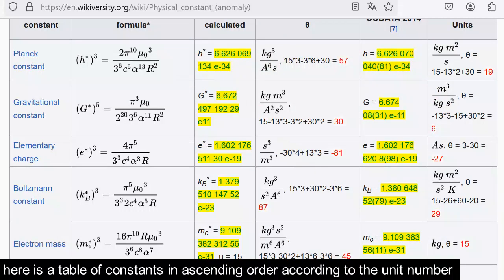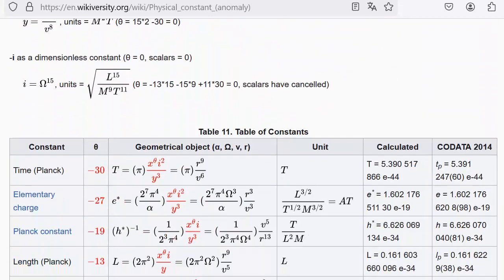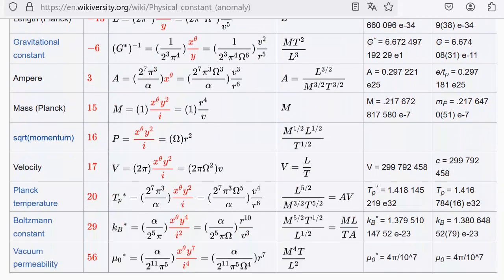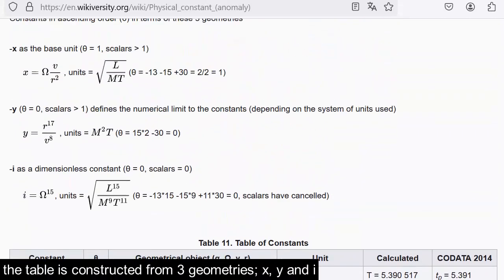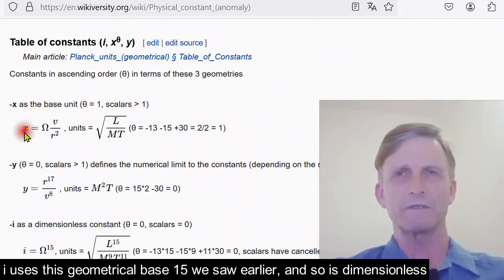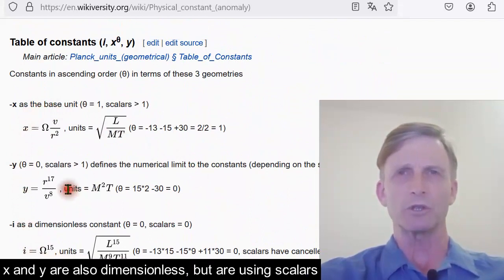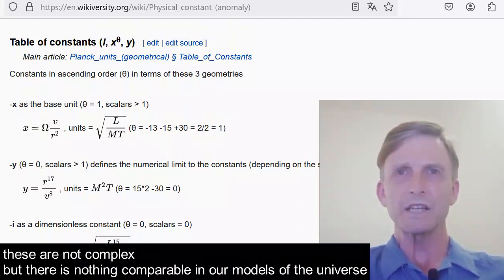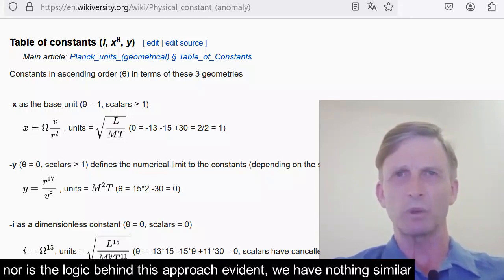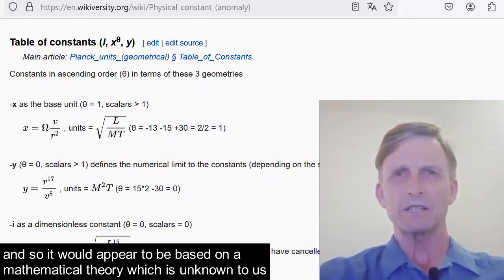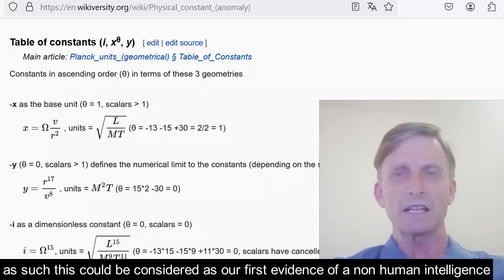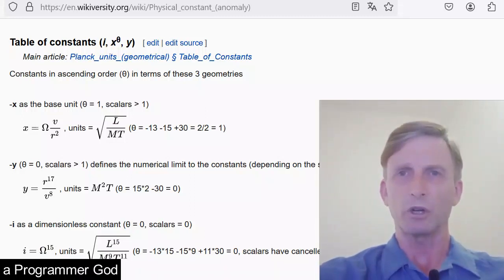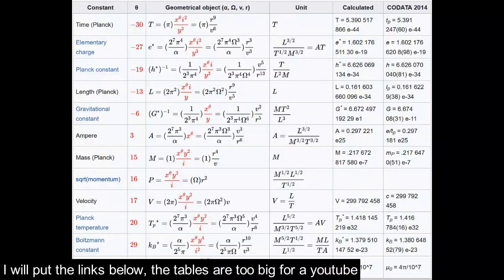Here is a table of constants in ascending order according to the unit number. The table is constructed from three geometries: x, y, and i. I uses this geometrical base 15 we saw earlier and so is the first dimensionless. X and Y are also dimensionless but are using scalars. So the programmer is using some geometrical tricks. These are not complex, but there is nothing comparable in our models of the universe, nor is the logic behind this approach evident. We have nothing similar, and so it would appear to be based on a mathematical theory which is unknown to us. As such, this could be considered as our first evidence of a non-human intelligence, a programmer god.